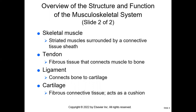These striated skeletal muscles are surrounded by connective tissue. The tendons themselves are tough fibrous tissue that connects skeletal muscle to bones. Ligaments connect bones to bones or bones to cartilage. Tendons connect muscles to bones.